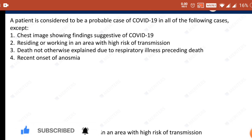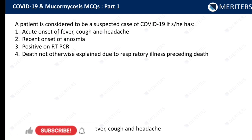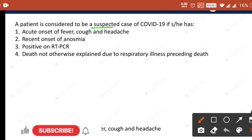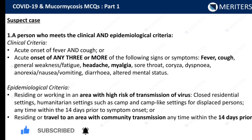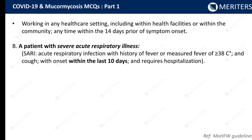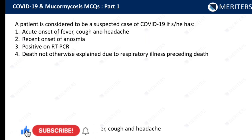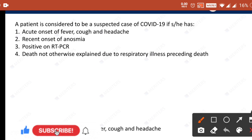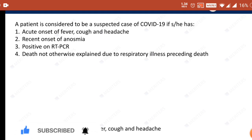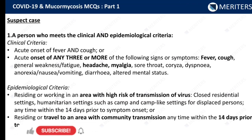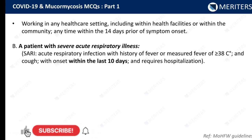A patient is considered a suspected case of COVID-19 if he or she meets specific guidelines. Here are the guidelines for suspected cases. From these, acute onset of fever, cough, and headache is considered to be a suspected case of COVID-19. This is very important — know the difference between confirmed case and suspected case. Remember and write it down.